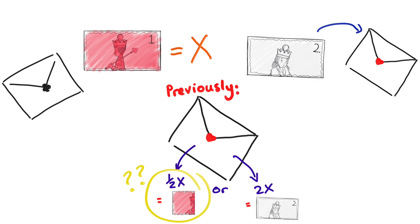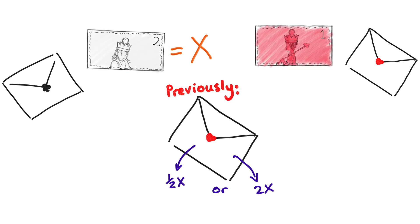And similarly, if my x had been actually $2, then the other is $1 and never $4.